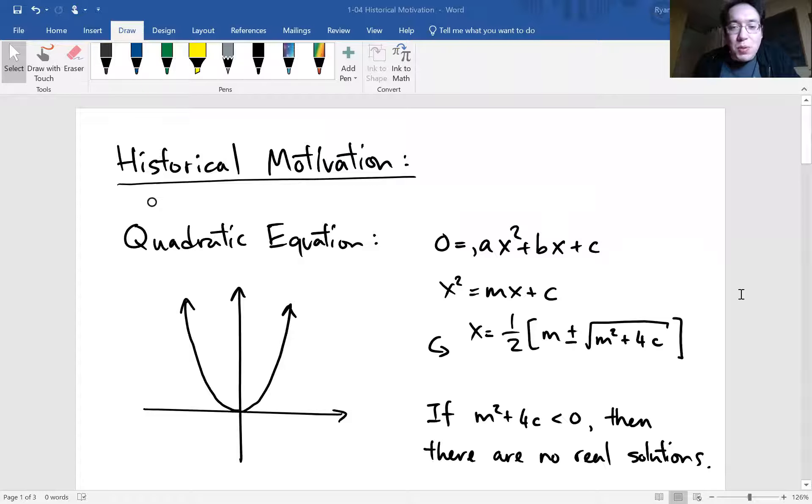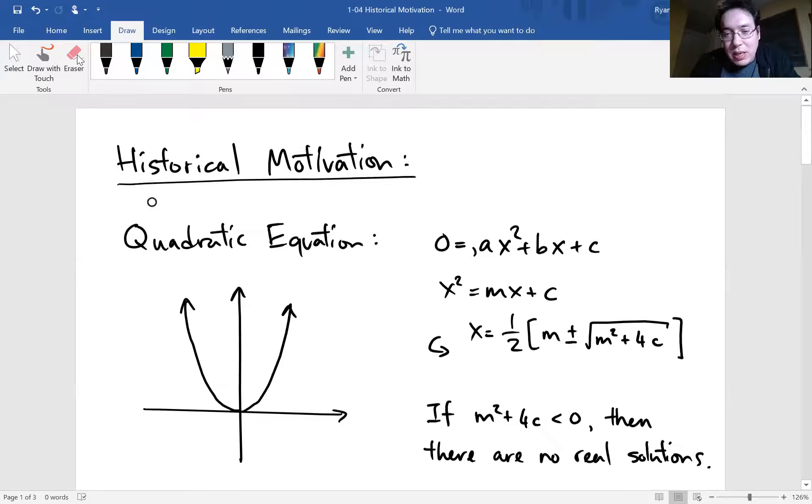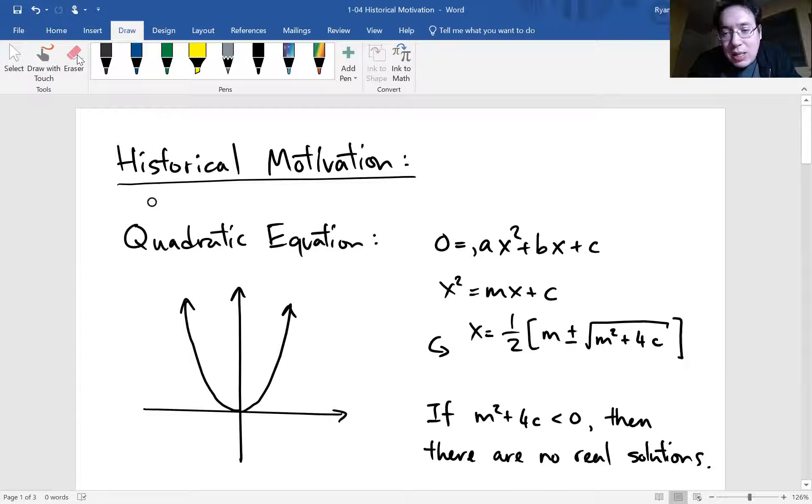Okay. So remember, imaginary number i is the square root of negative one. It's a number such that when you square it, you'll get a negative number. So let's first look at quadratic equation. Okay. So quadratic equation could be written as zero equals ax² plus bx plus c.